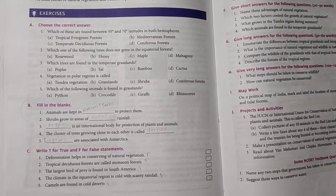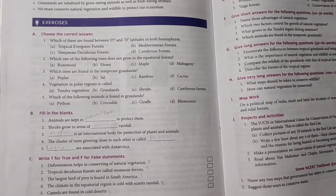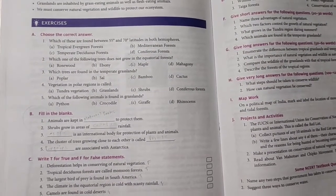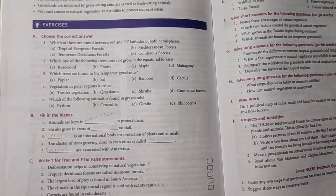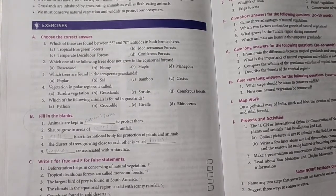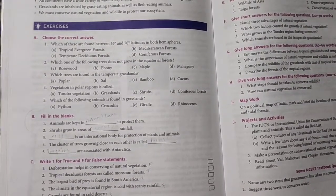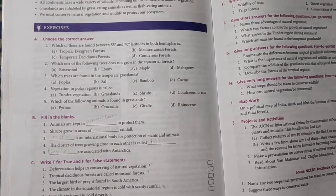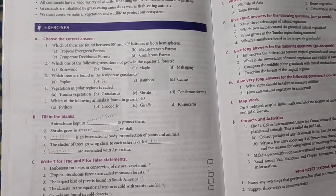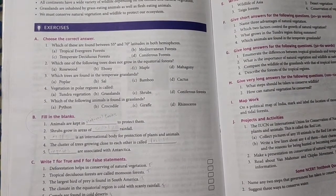Let's start. First one: choose the correct answer. Which of these are found between 55 degrees and 70 degrees latitudes in both hemispheres? Options are: A) tropical evergreen forest, B) Mediterranean forest, C) temperate deciduous forest, D) coniferous forest. Between 55 degrees and 70 degrees, the forest will be coniferous forest.